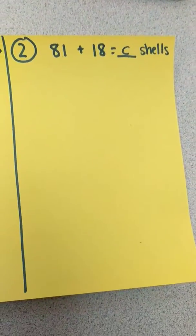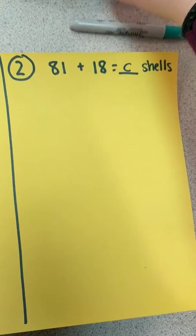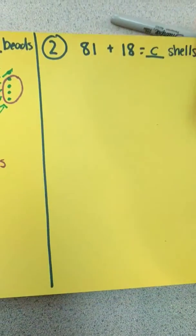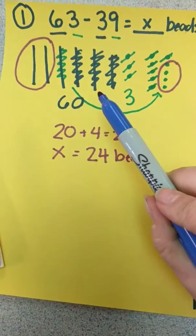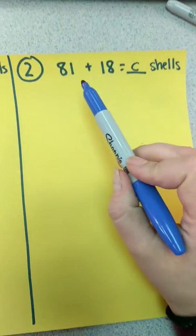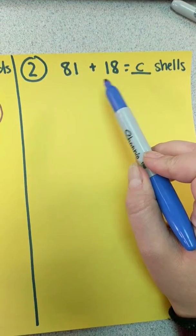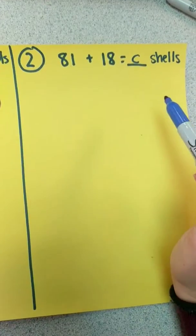Drawing our strips of tens and ones with addition, unlike subtraction, we don't draw just one number with strips of tens and ones like we did the 63. We're gonna draw both numbers with strips of tens and ones and then label underneath.